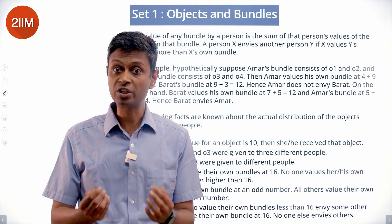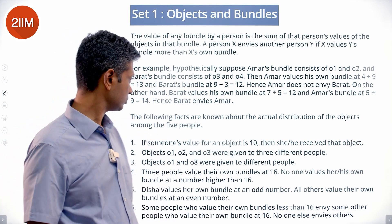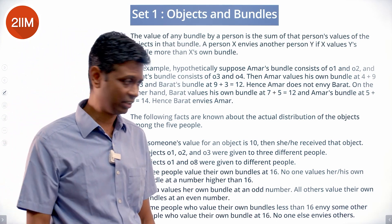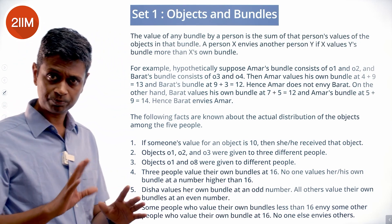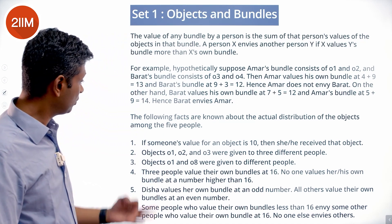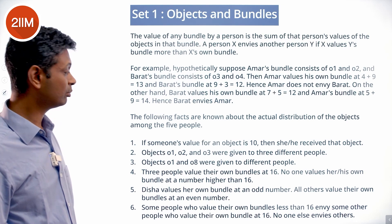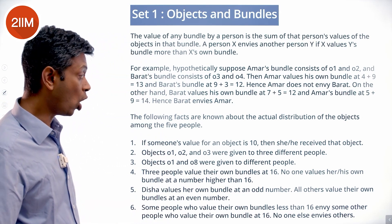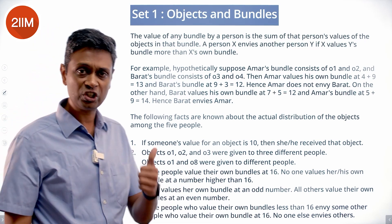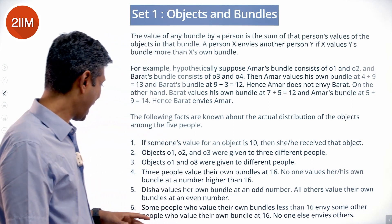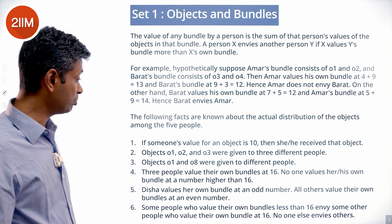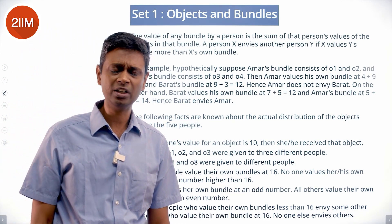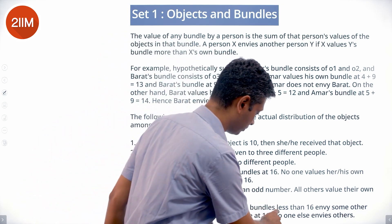The following facts are known about the actual distribution of the objects: if someone's value for an object is 10, then she or he received that object. Objects O1, O2 and O3 were given to 3 different people. O1 and O8 were given to different people. Three people value their own bundles at 16. No one values their own bundle at a number higher than 16. Disha values her own bundle at an odd number; all others value their own bundles at an even number.